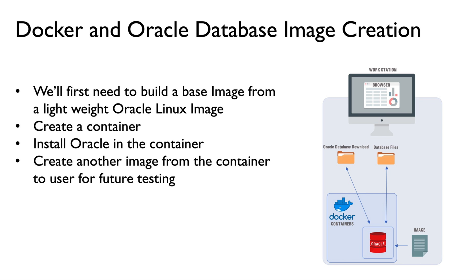Once we've got those things done, we're going to use a lightweight Oracle Linux image to build the base image that we'll take everything else from. Once we've got that base image built, we'll then create a container, and inside of that container we'll install the Oracle database software. Once we've got the software installed, we will build an image on that container, and that image will form the basis of all exercises moving forward, giving us something we can use for creating containers in the next series of exercises.